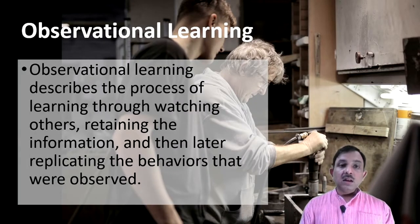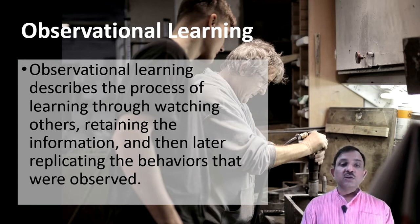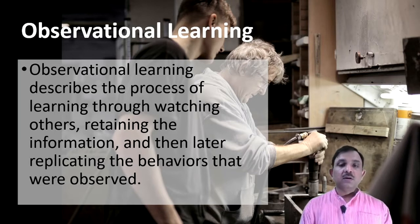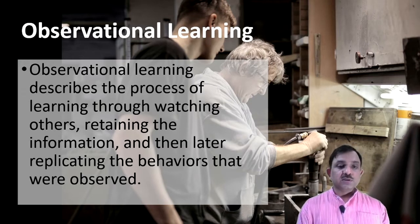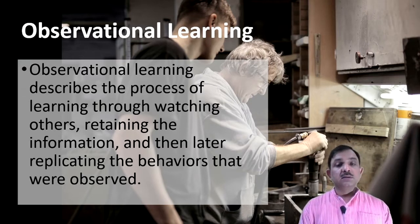Observational learning describes the process of learning through watching others, retaining the information, and then later replicating the behavior that was observed. In observational learning, a learner observes someone, retains what they have observed, and then replicates that same behavior whenever required or whenever there is a situation to use that learning.